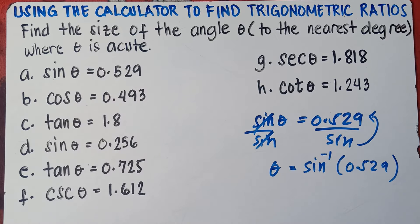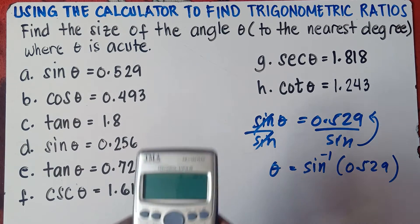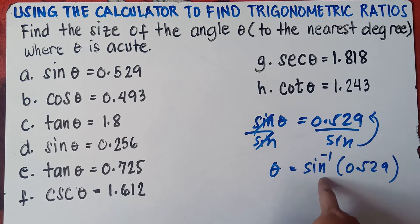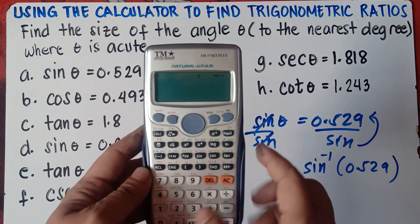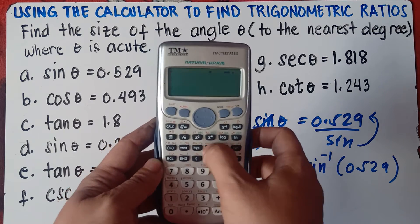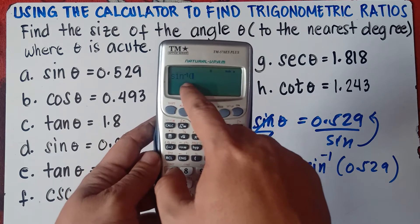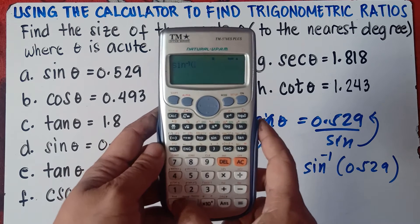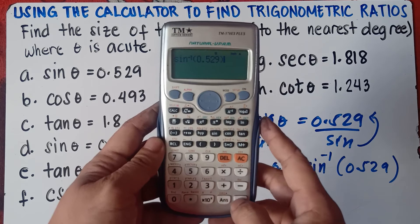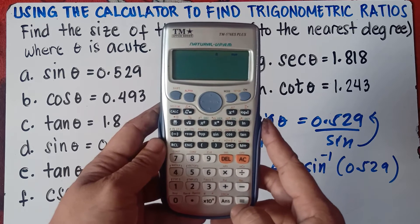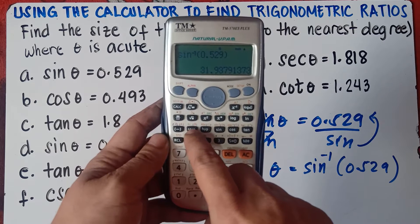Now the shortcut is you can just simply use the calculator to find the value of theta. So in the calculator, this will be inverse sine. So press shift, then press sine — shift sine. You will know that it is inverse sine if it is raised to the power of negative 1.